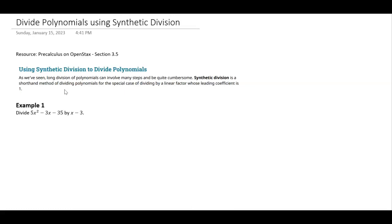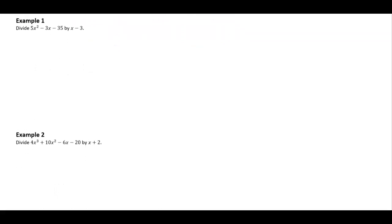So I can use it here in example 1 because my leading coefficient of x minus 3 is 1, and x minus 3 is a linear term. So I'm able to use synthetic division this way. If I were to set this up with long division, this is what it would look like.